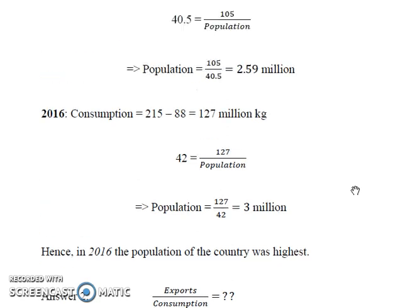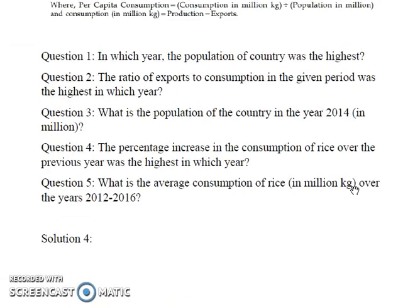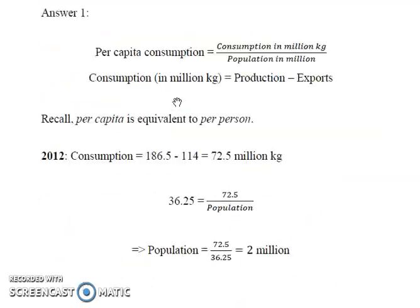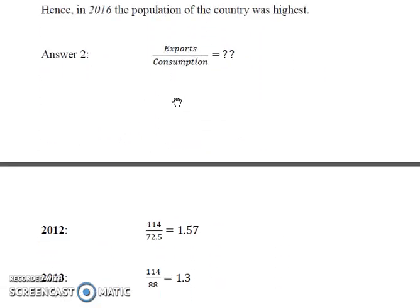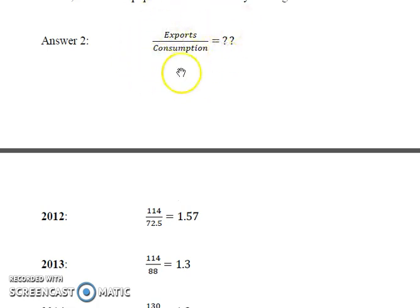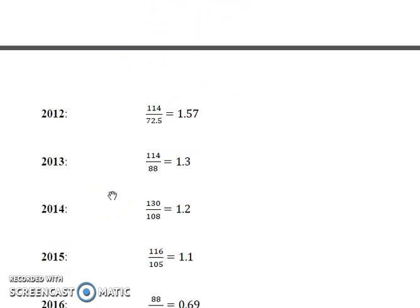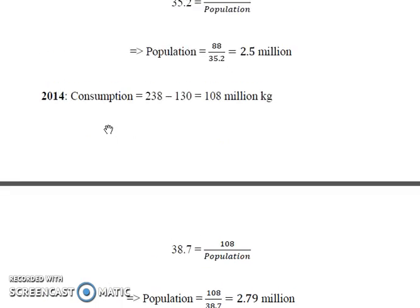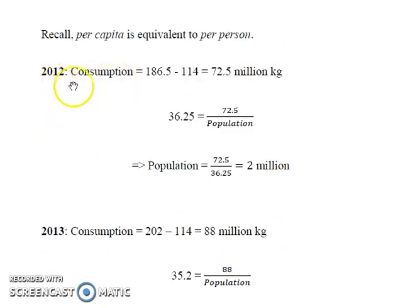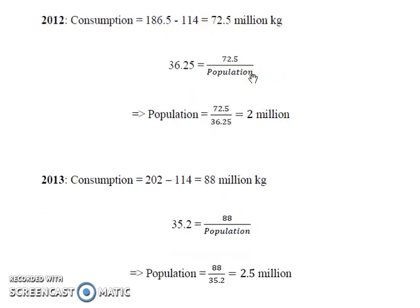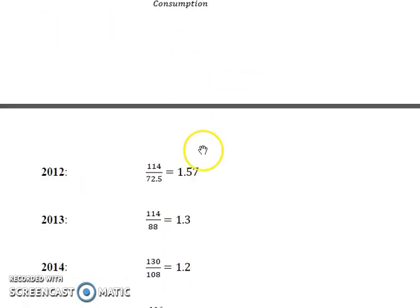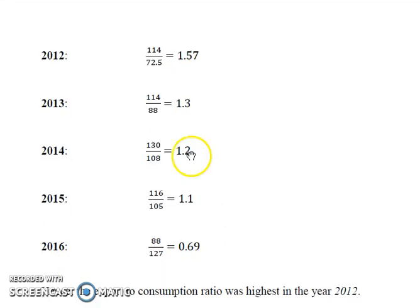In question 2 we are asked about the exports to consumption ratio and when it was highest. In 2012 we have exports of 114 million kg and consumption of 72.5 million kg, which we already found. Dividing these two numbers gives the ratio. Doing the same for each year, we find that the exports to consumption ratio was highest in the year 2012.